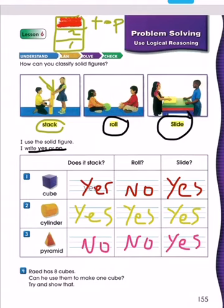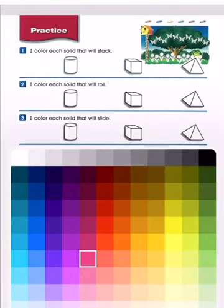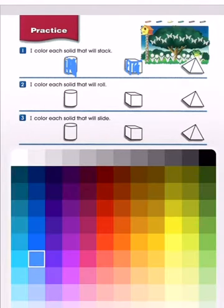Now we have some practice. You can open page 150. We have practice you can solve with me. Number one: color the solid figure that can stack. A cylinder can stack, so we color the cylinder. A cube can also stack, so we color the cube. The pyramid cannot stack, so we do not color it.